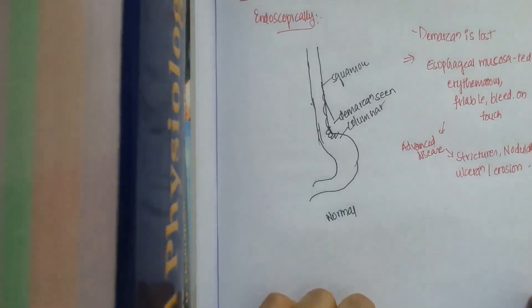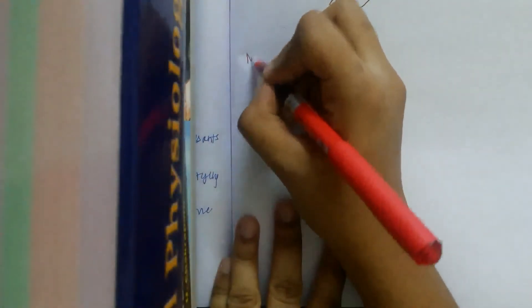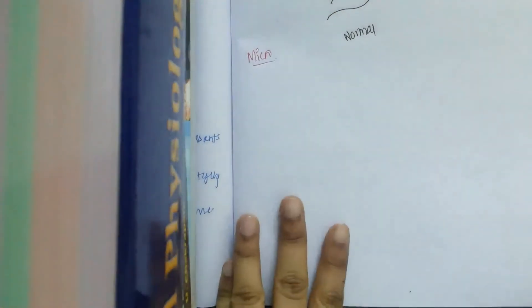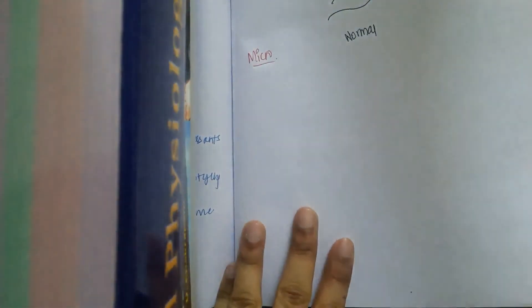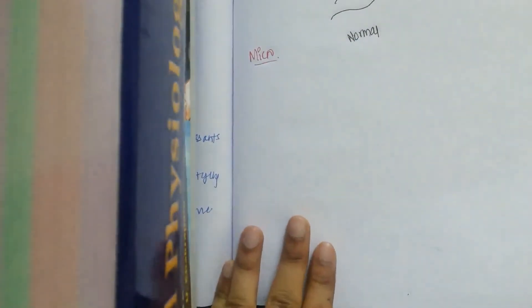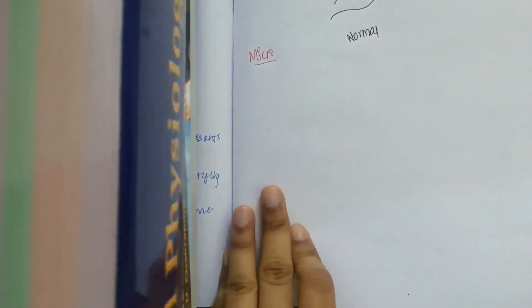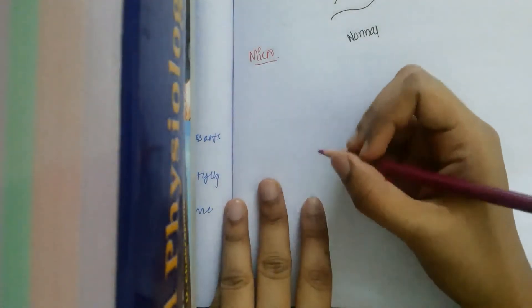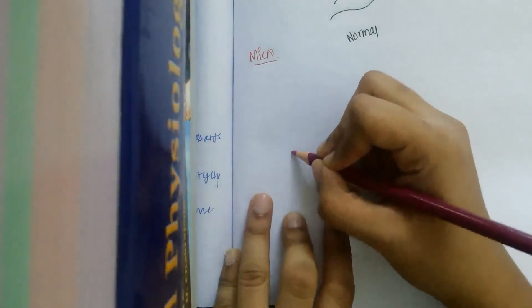Now, coming to the microscopic picture, how does microscopically this look? I wanted to draw the picture. Here, the reflux changes in the distal esophagus, they are basically basal cell hyperplasia. First, there may be basal cell hyperplasia and deep elongation of papillae.